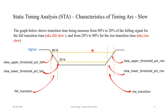From the timing library perspective, it provides slew lower threshold percentage fall, slew upper threshold percentage fall, slew lower threshold percentage rise, and slew upper threshold percentage rise. Whether the value is 20%, 10%, or 30% comes entirely from the timing library information. The delay between 80% to 20% on a falling signal is the fall transition. This delay is calculated based on the slew range window — for example, 80% to 20% for fall and 20% to 80% for rise. Based on these values, the tool calculates the transition time.